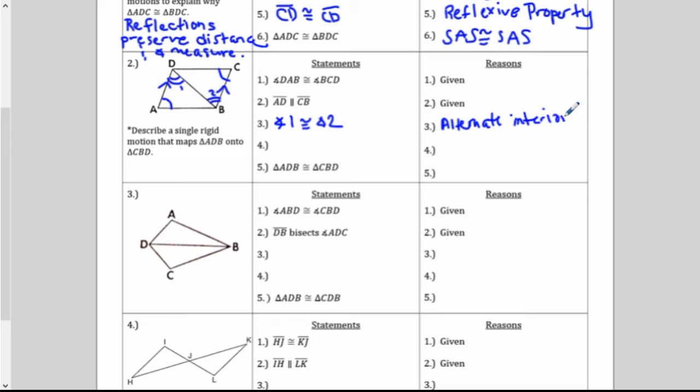Again, you might get corresponding. Same side interior, not so much because those aren't equal to each other. Those add up to 180. So usually you don't see something like that because you have to be a little bit more involved. But remember, you have to have parallel lines. Sometimes they look parallel. You can't do this unless it says it's parallel in the given.